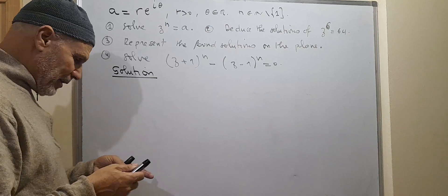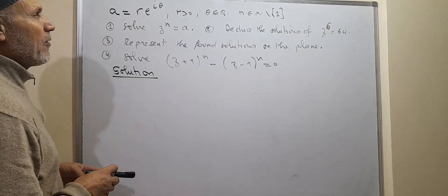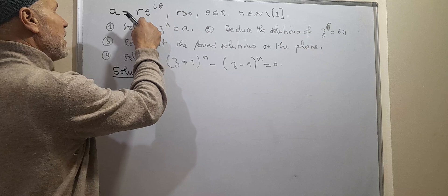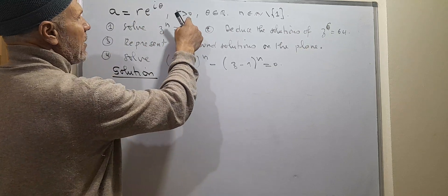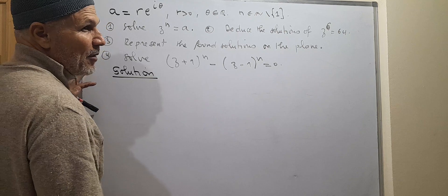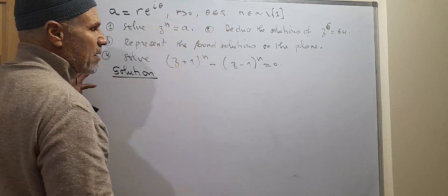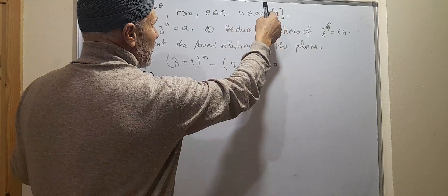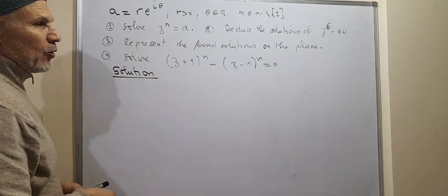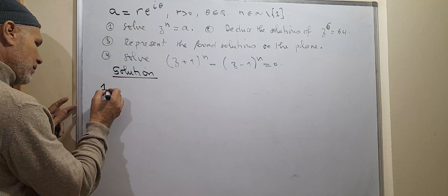Assalamu alaikum everyone. This is the third exercise of the midterm exam of the national high school of mathematics, Algiers. Let a be a complex number represented in exponential form, where R is greater than 0. This is a non-null complex number. Theta is the principal argument and n is a natural number not equal to zero. The first question: solve the equation z^n = a.